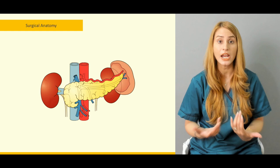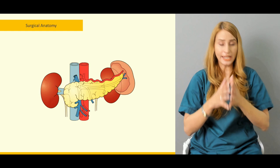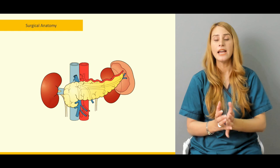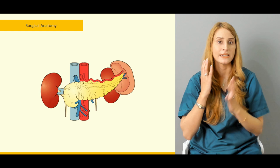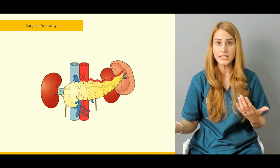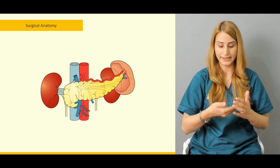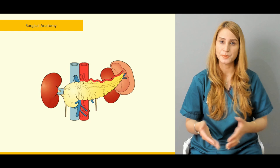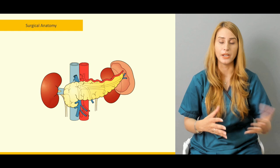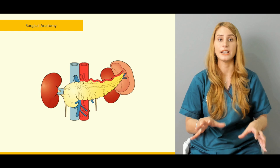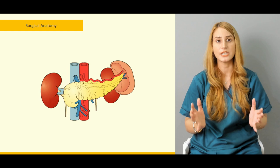The pancreas is a retroperitoneal structure. It occupies the C-shaped curve of the duodenum. The duodenum is divided into four parts: the first part is horizontal, the second is more vertical, the third is again transverse, and the fourth goes downward. The pancreas sits centrally, enclosed by this C-shaped loop of the duodenum.